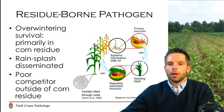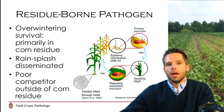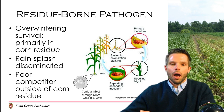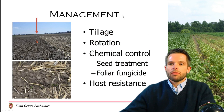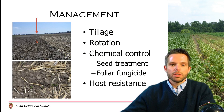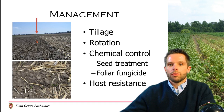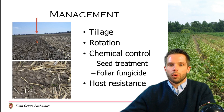Typically we'll see corn-on-corn rotations having higher levels of anthracnose than corn, soybean, and wheat rotation type systems. Tillage can also be helpful, as the residue that lays on top of the soil surface is very important, and if we can bury some of that residue through tillage practices, that can help reduce the amount of spore load out there.